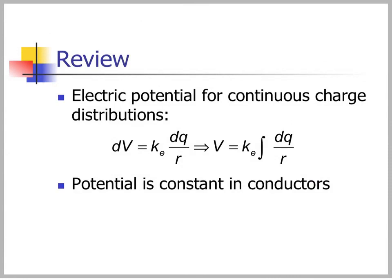To review what we talked about today: we covered how to get electric potential for continuous charge distributions — dV equals k dq over r, leading to V equals k times the integral of dq over r. That is the main topic to spend time reviewing. We also talked about what potential looks like in conductors, and learned that potential is constant inside a conductor.